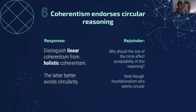The holistic version avoids the circularity objection better. One response to that response is to ask why we should accept that the size of the circle affects how much we are happy with this type of reasoning. The difference is just that linear coherentism gives you a smaller circle before you get back to your original belief, and holistic coherentism gives you a bigger circle. But why should the size of the circle affect the circularity of the reasoning? One thing to note on behalf of the coherentist is that foundationalism ultimately can also be a little bit circular — your basic beliefs are justified by nothing else, so all the beliefs above don't totally get away from circularity either.